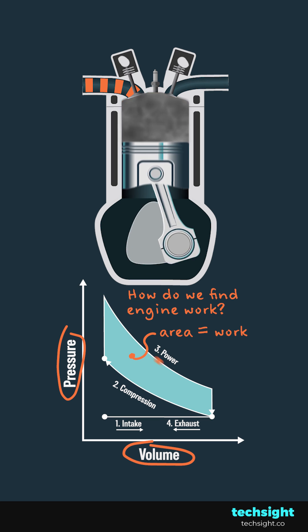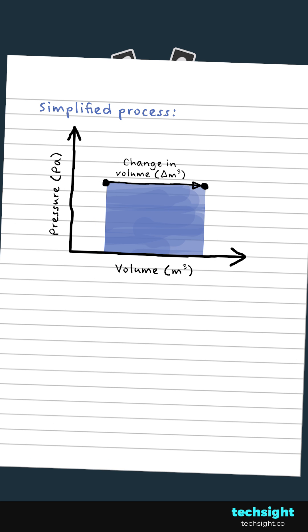To explain why, let's look at a simplified process with metric units. Finding the chart area by multiplying the pressure with the change in volume gives newtons times by meters. This is once again our equation for work, force times by distance.